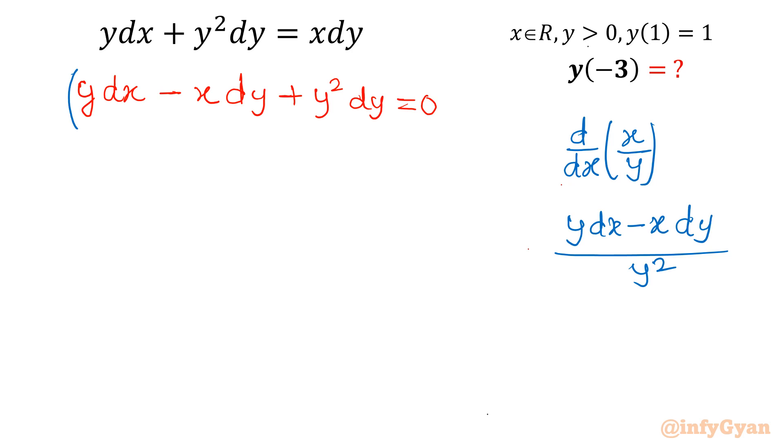Now see this bracket, it is making that form. Now y dx minus x dy over y squared—y squared is missing. So what we will do? We will create y squared in the denominator.